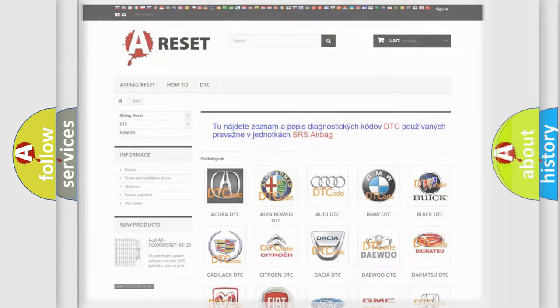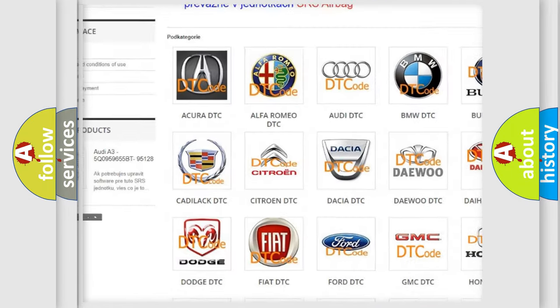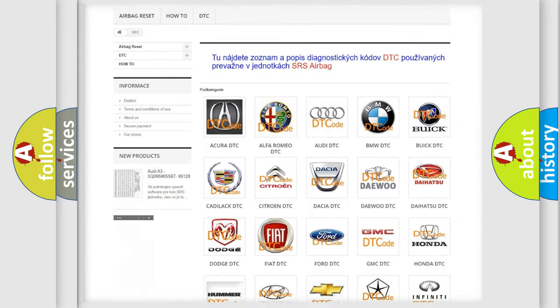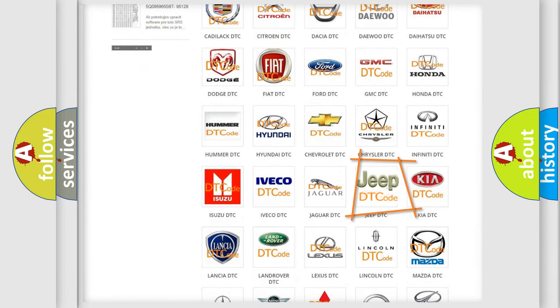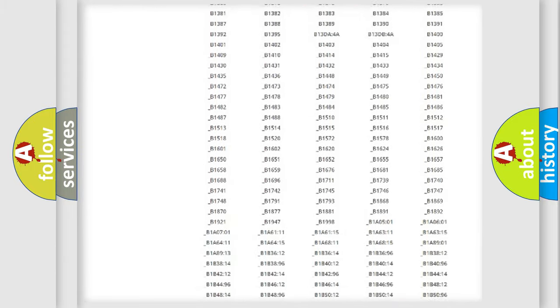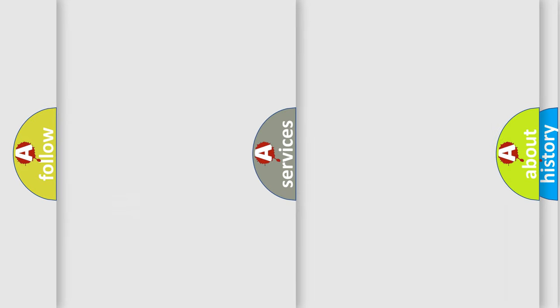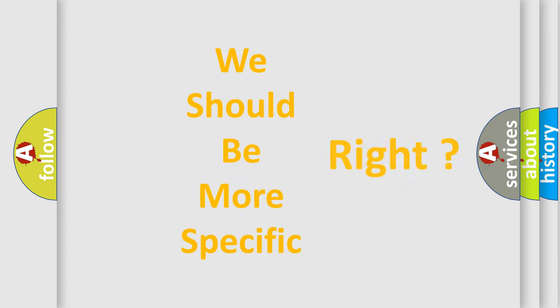Our website airbagreset.sk produces useful videos for you. You do not have to go through the OBD2 protocol anymore to know how to troubleshoot any car breakdown. You will find all the diagnostic codes that can be diagnosed in Jeep vehicles, and also many other useful things. The following demonstration will help you look into the world of software for car control units.